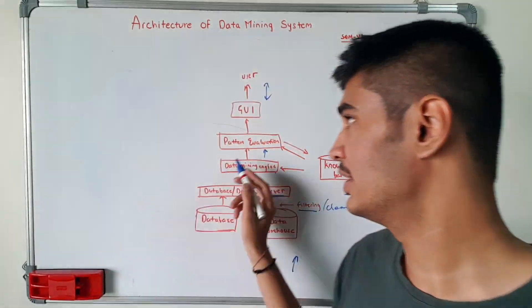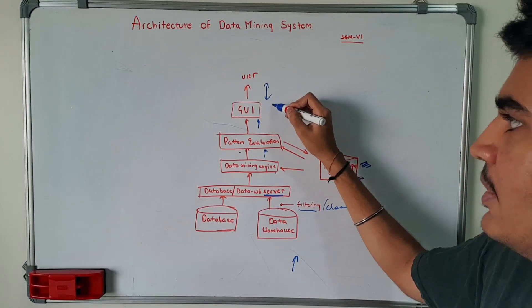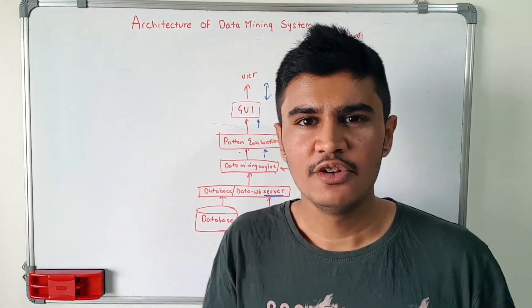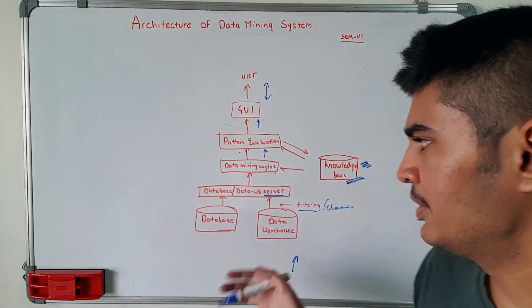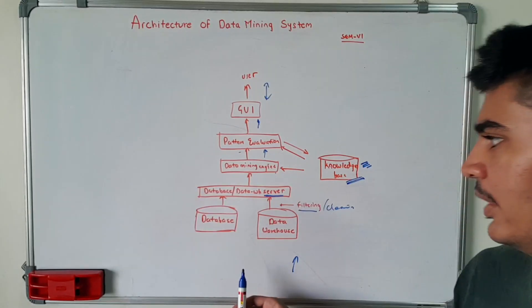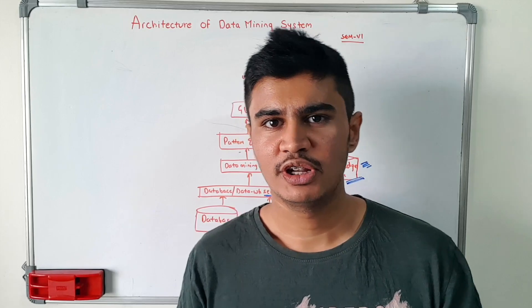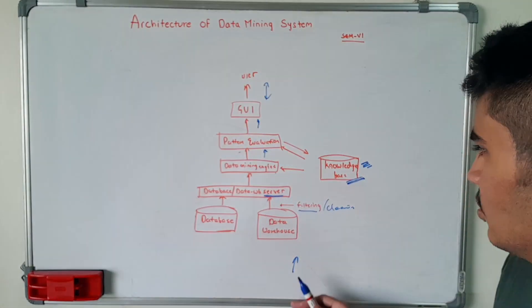And then we have GUI, so here GUI is basically the graphical user interface which will basically interact with the database. So this is the basic architecture of a data mining system, from database to data warehouse server, then data mining engine, then pattern evaluation and finally GUI. So this was the basic architecture of a data mining system.